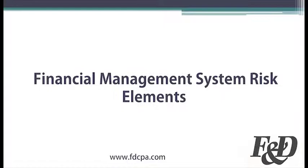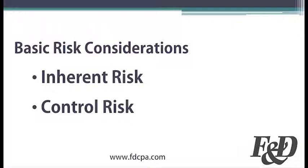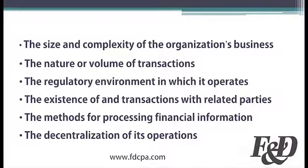These would be considered the financial management system risk elements. Whether an organization is focusing on the security of its resources or the propriety of its financial statements, it must start with two basic risk considerations. What is the inherent risk associated with the financial management system? In other words, what is it about the overall context in which the organization operates that increases the risk of its resources or financial statements being compromised?